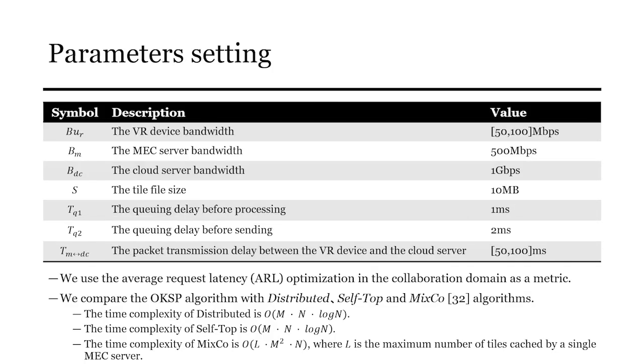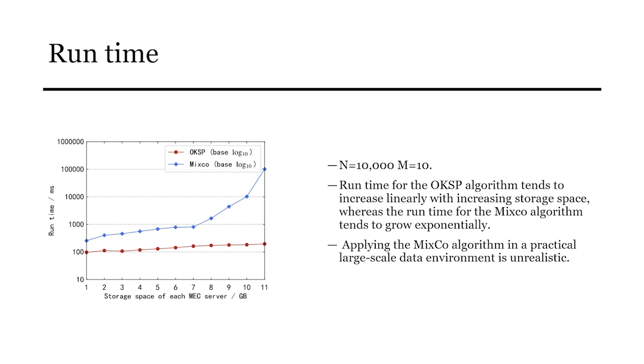We set the experimental parameters according to the values in the following table. We use the average reduced latency optimization in the collaboration domain as a metric. We compare the OKSP algorithm with distributed safe-top and the mixed-core algorithm. In this section, we will evaluate the speed of our OKSP algorithm. We perform a speed comparison experiment of the OKSP and mixed-core. We can see the runtime for the OKSP tends to increase linearly with increasing storage space, whereas the runtime for the mixed-core tends to grow exponentially. Applying the mixed-core algorithm in a practical large-scale data environment is unrealistic.